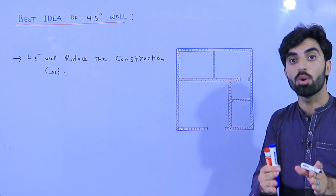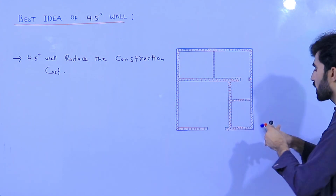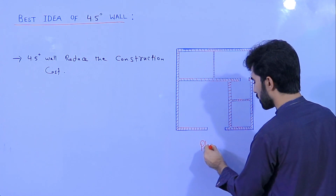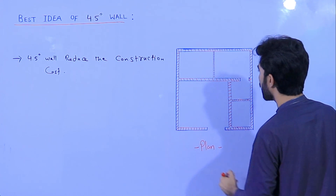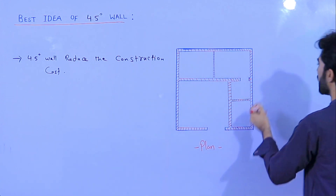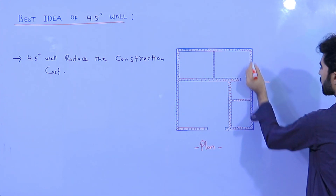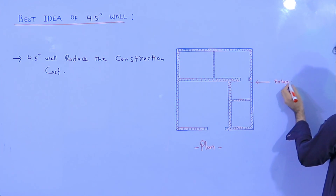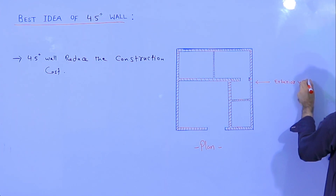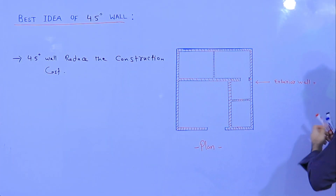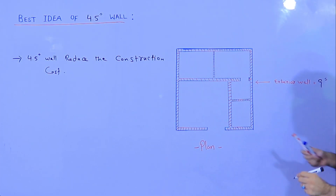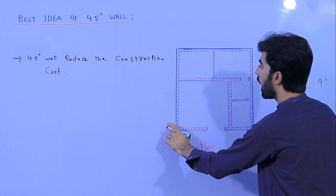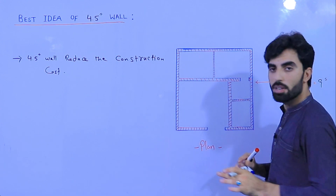As you can see, this is the house plan. The exterior walls are 9 inches. Anywhere the exterior wall of the house should be 9 inches.